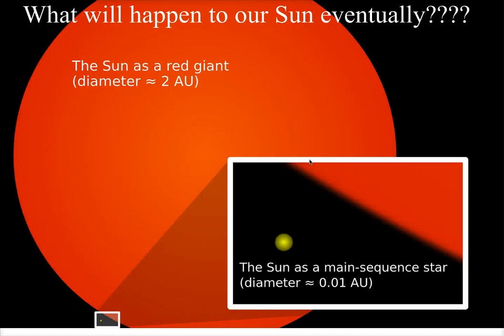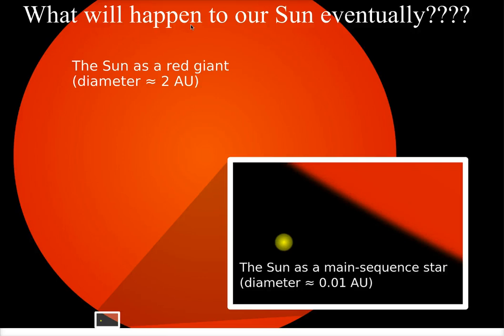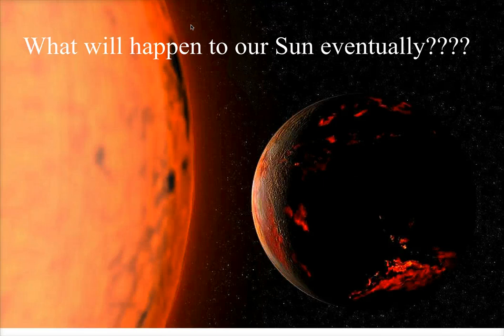A red giant is the result of a star running out of hydrogen fuel and leaving the main sequence, with its outer layers expanding to an enormous size because gravity and gas pressure are no longer balanced. A model shows the Sun's current size versus what it's predicted to become as a red giant — an enormous expansion outward, which will not be good news for the Earth and the planets closest to it. Thankfully, that's billions of years in the future.